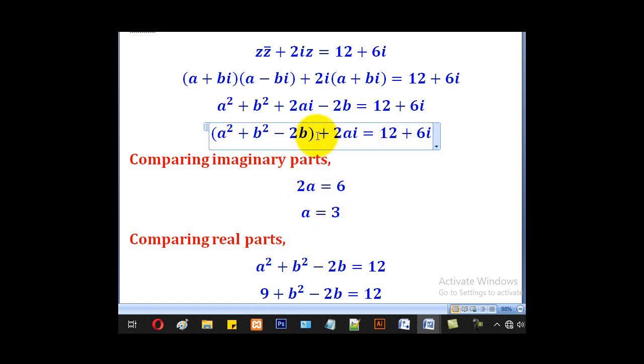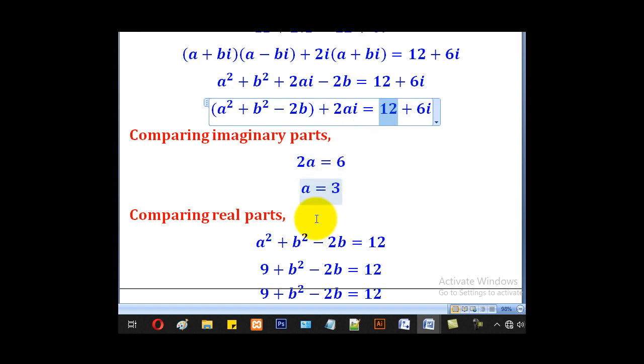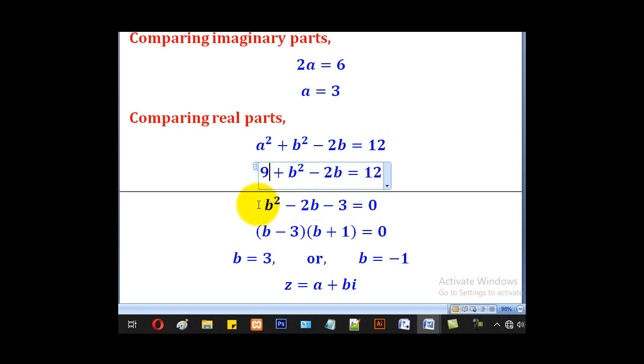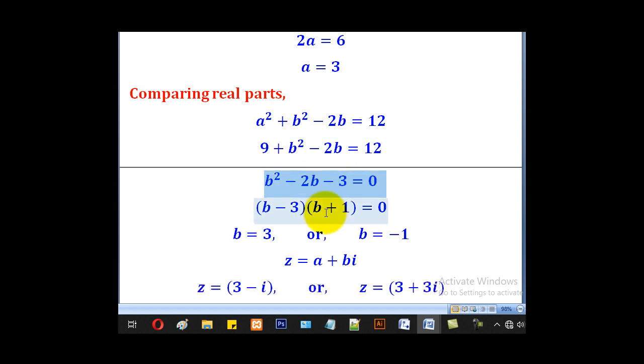Do the same, compare the real parts. So this is equal to 12. But you already know that a is 3, so we substitute 3 here. We shall come up with a quadratic equation in B. Factorize it out to get that, which means that B is equal to 3 or B is equal to negative 1.